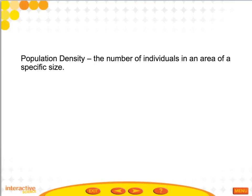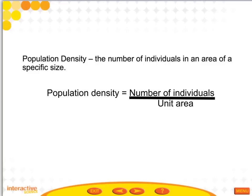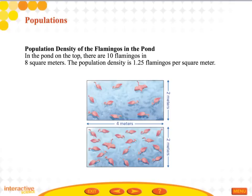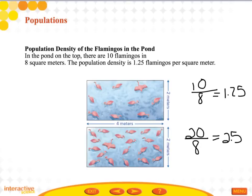Population density is the number of individuals in an area of a specific size, calculated as: population density = number of individuals divided by unit area. For example, 10 flamingos in an 8 square meter area gives a density of about 1.25 flamingos per square meter. Twenty flamingos in the same area gives 2.5. Adding 14 more to get 34 flamingos in 8 square meters results in 4.25 flamingos per square meter.